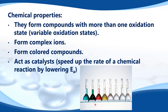Here we have the colored compounds of some transition metals: nickel, chromium, cobalt, vanadium, and manganese. Magnesium, sodium, and calcium are included to show that they do not form colored compounds, because they are not transition metals.